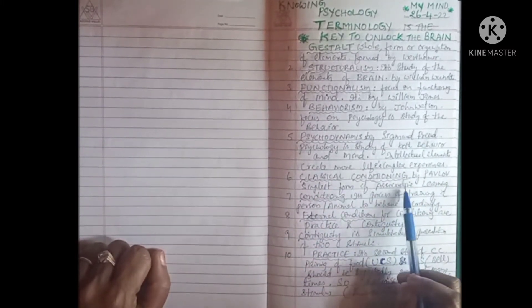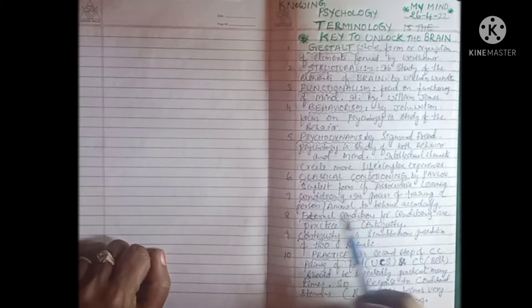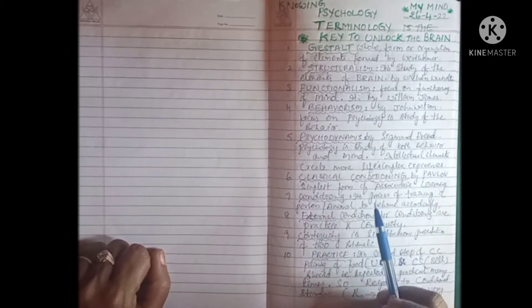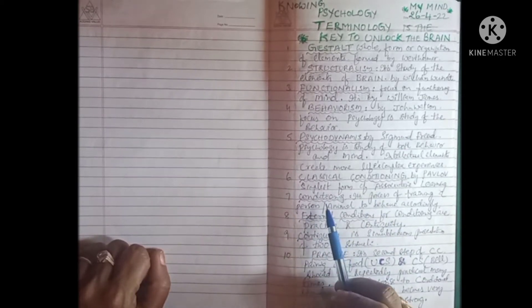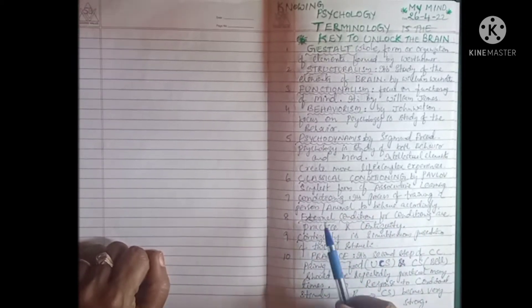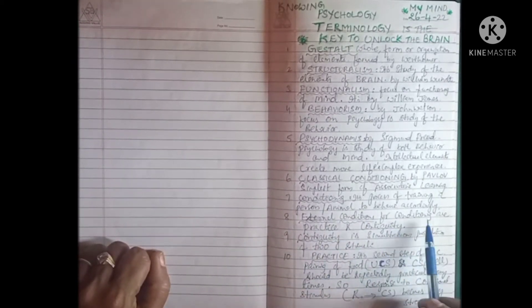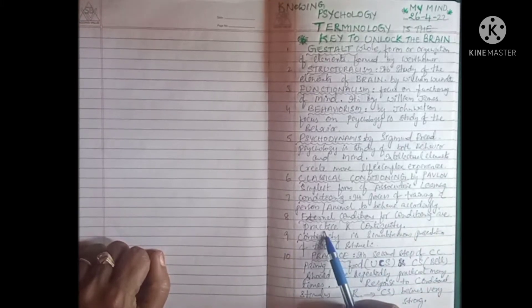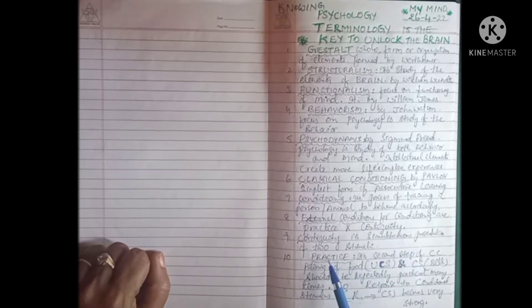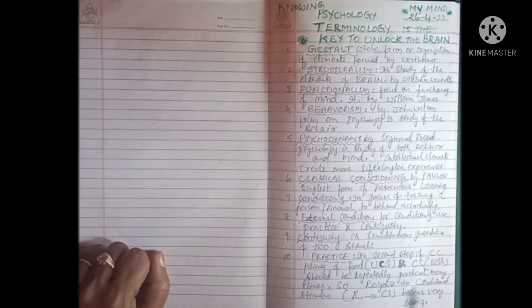Classical conditioning is given by Pavlov. It is the simplest form of associative learning and basically used form of learning. Conditioning is the process of training a person or animal to behave accordingly. External conditions for conditioning are practice and contiguity. Contiguity means simultaneous presentation of two stimuli at a time.